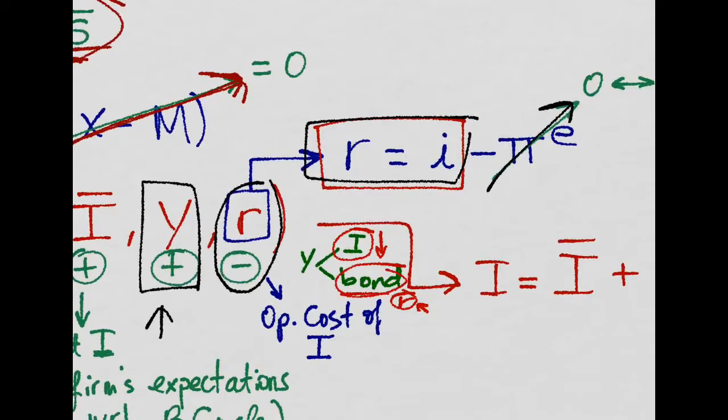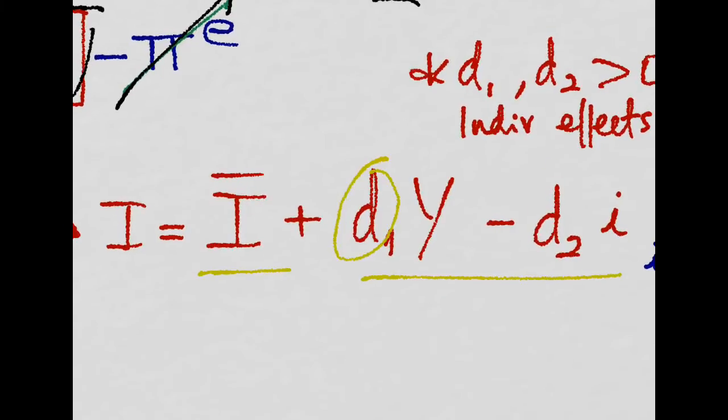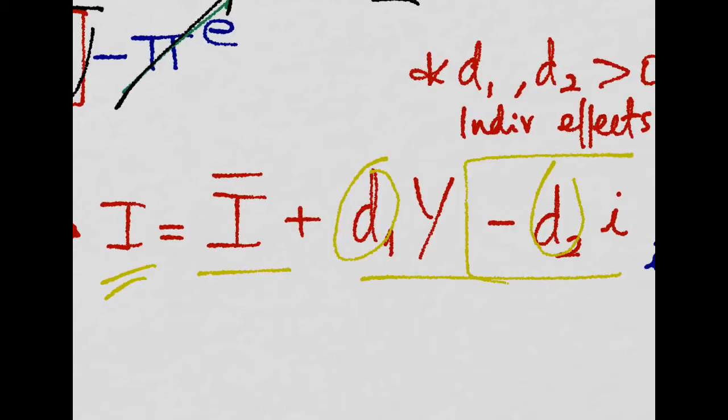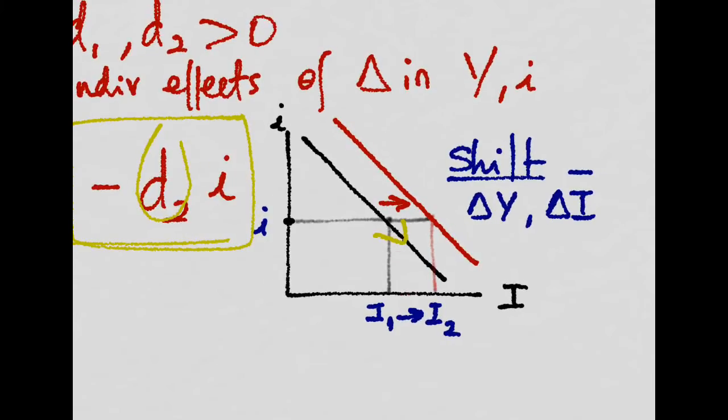These real interest rates is the opportunity cost that firms face when investing in physical capital. So the investment function looks like this: autonomous investment plus all this. These two guys are positive, so investment depends negatively on the interest rate. And if we plot it, it will look like this. When we decrease the interest rate, we increase investment.